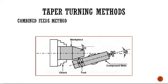In the combined feed method, the compound slide is tilted from its position, and gradually the hand lever is operated so that a taper movement is applied to the tool post. The cross slide provides the perpendicular action, such that angle alpha is cut on the workpiece. Note that the compound slide is set to alpha by 2, since both sides together form the full taper angle of alpha.